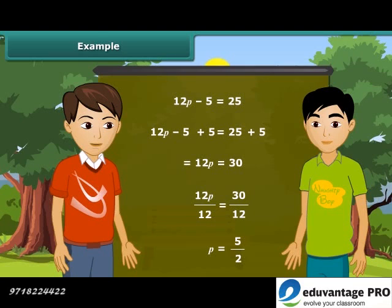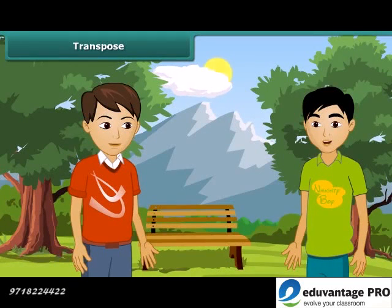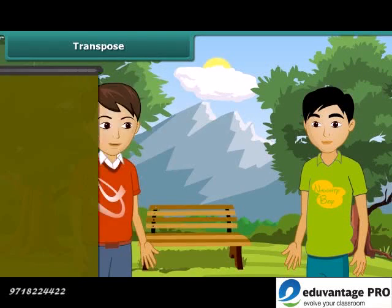What is transposing? Come, I will explain. Transposing means changing side. For example, in this example, we have changed the side of 5. And when we transpose any number, we change its sign. Plus becomes minus, multiplication becomes division. And now by transposing 12, P becomes 30 divided by 12.